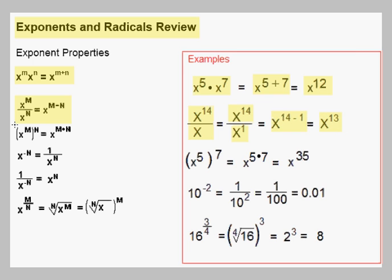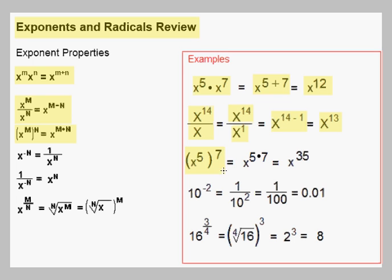Now there's the power rule for exponents: x to the m raised to the n power is x to the m times n. Here's an example. If we have the fifth power of x raised to the seventh power, we multiply the two exponents and we get x to the five times seven, or x to the thirty-fifth power.